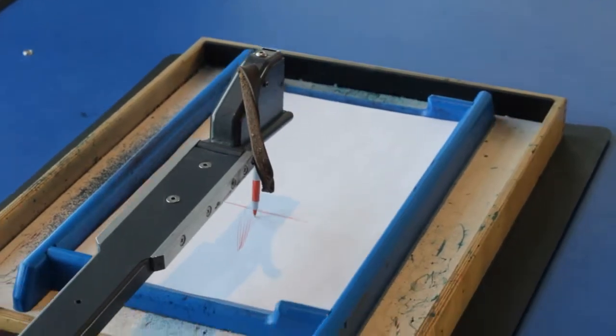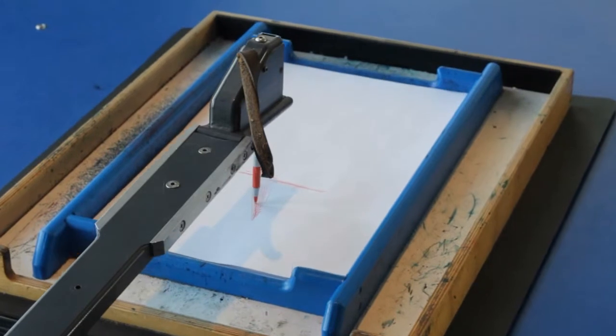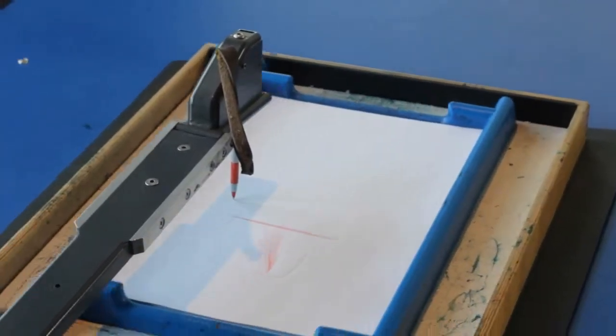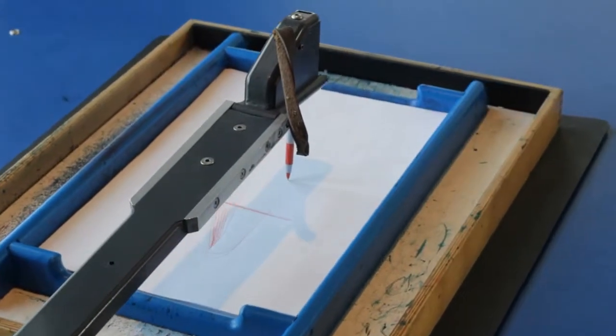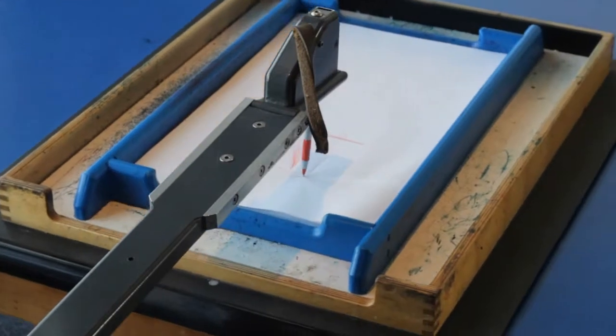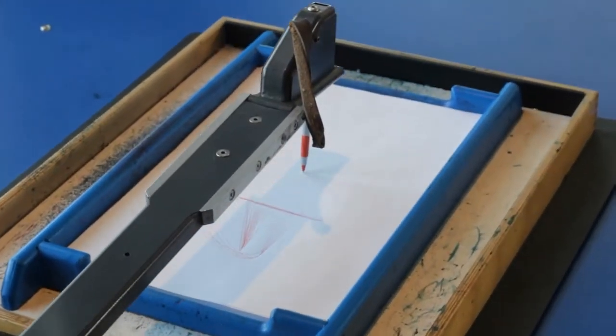And the other form of motion that this table can do because it's suspended is twisting or torsional. And that will make an oval shape, which again will become increasingly smaller as the table slows down.